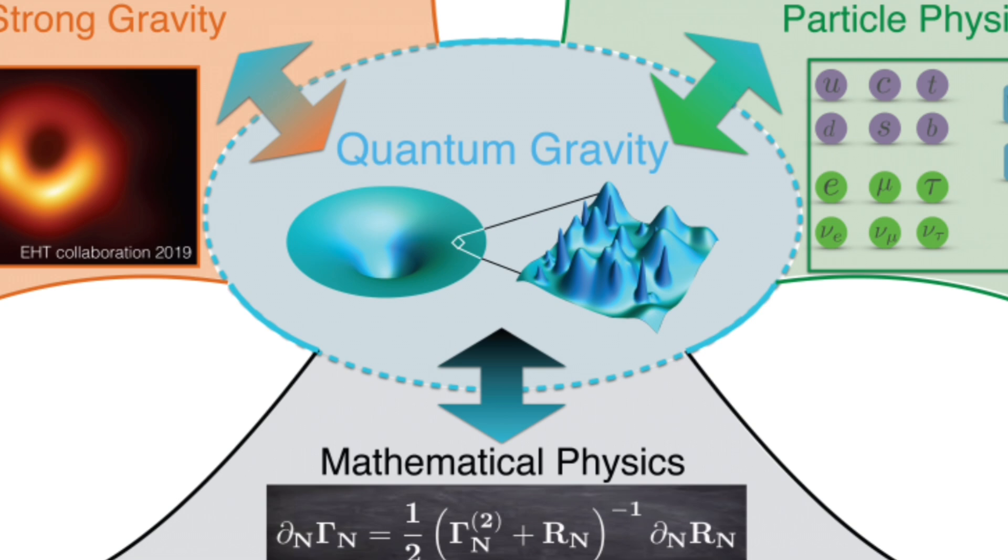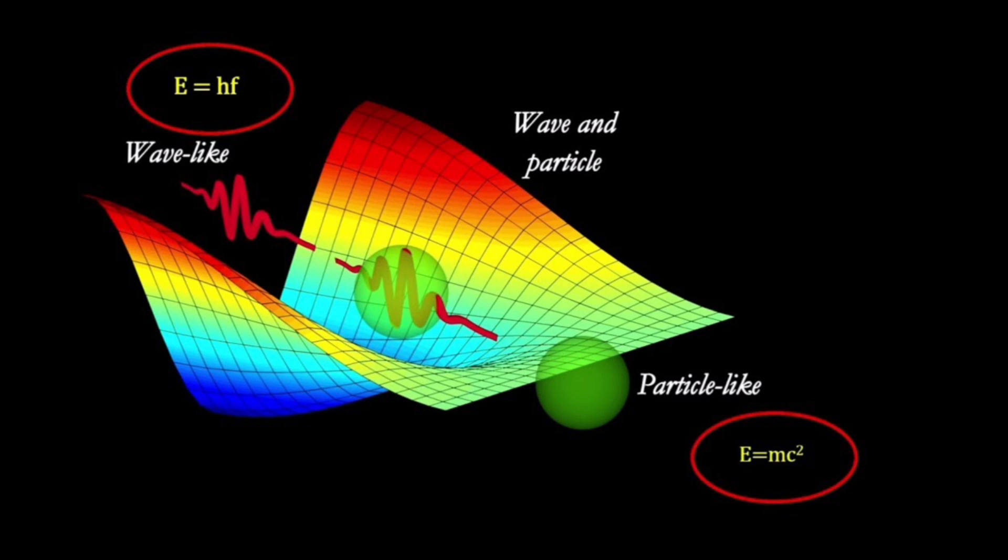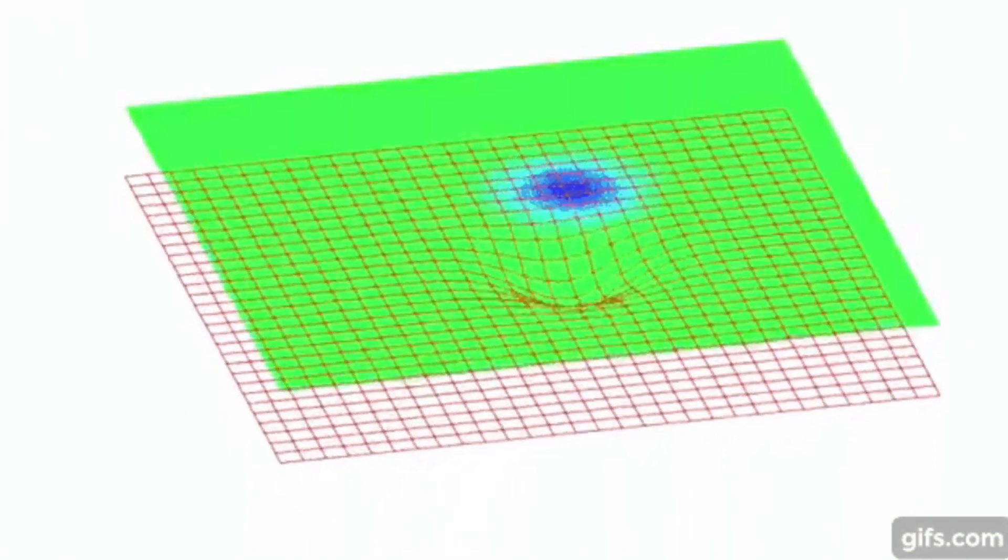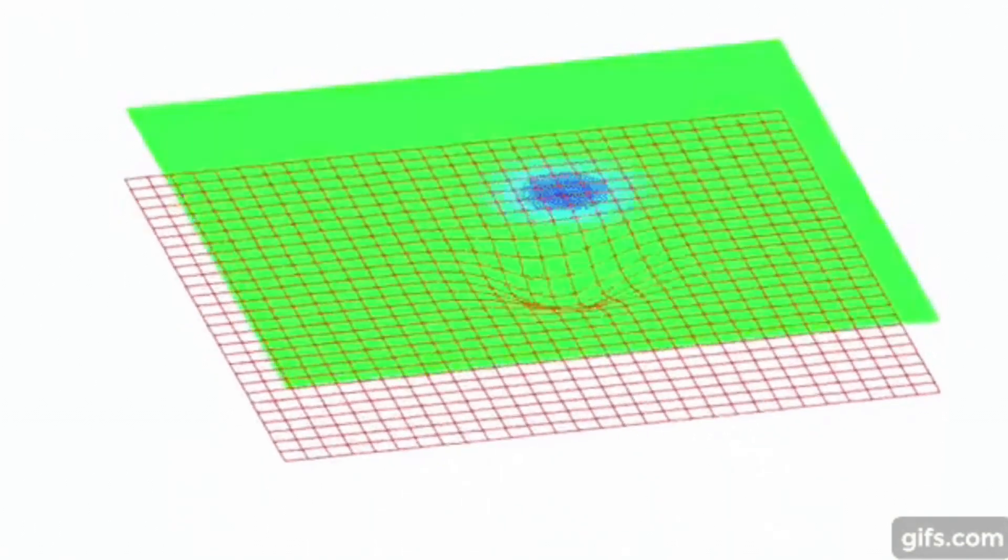QFT also tells us that fields are not just smooth and continuous, but rather made of tiny packets or quanta of energy. QFT also tells us that particles and fields can transform into each other, creating and destroying matter and energy.